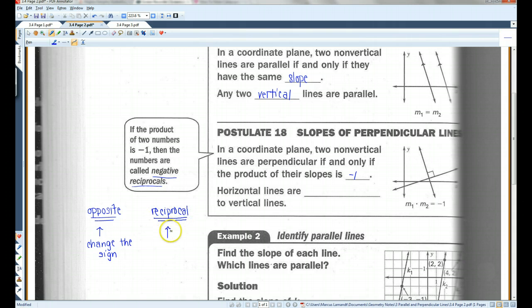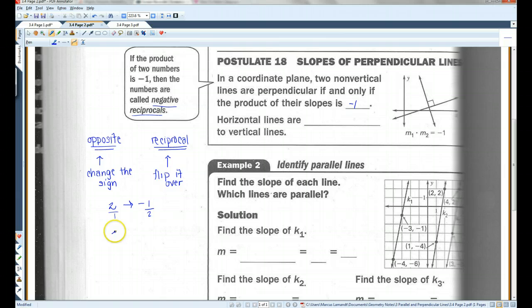Reciprocal means that you flip it over. So, for example, if you have a slope of two, the opposite reciprocal would be negative one over two. You change the sign, and you flip it upside down. These would be opposite reciprocals of each other. And, if you multiply two times negative one half, you're going to get negative one. So, the product of their slopes are always going to be negative one. Horizontal lines are always going to be perpendicular to vertical lines.